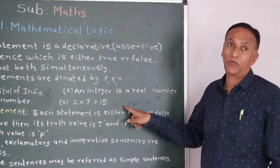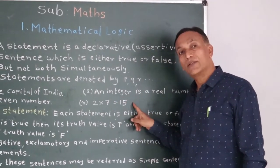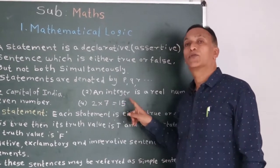Now 2 multiplied by 7 is equal to 15. 2 multiplied by 7 is equal to 15 is a false statement, because 2 multiplied by 7 is equal to 14.